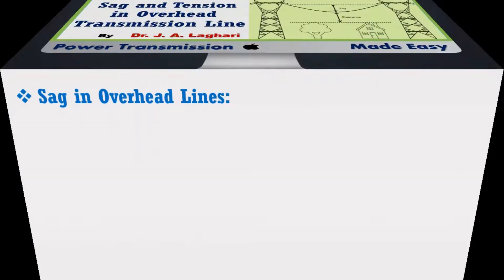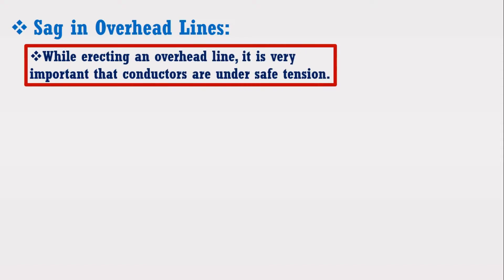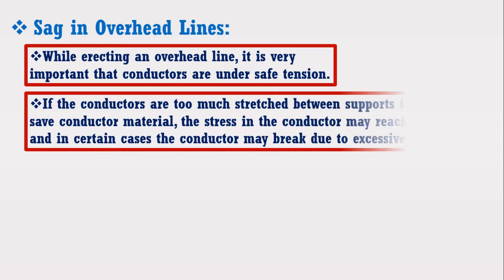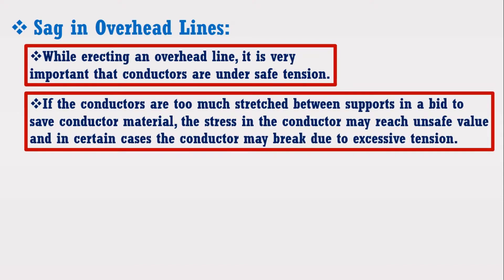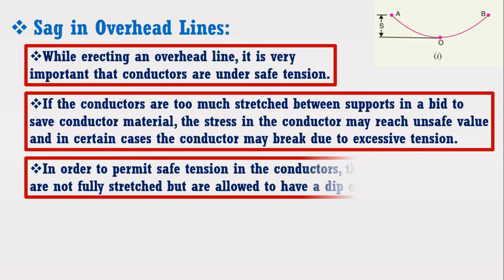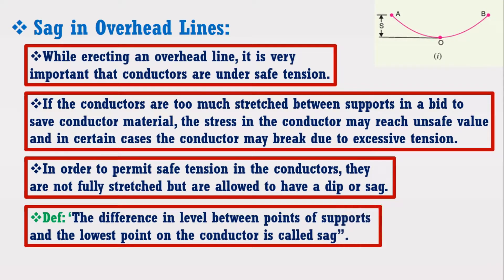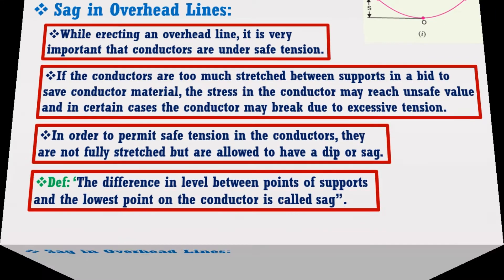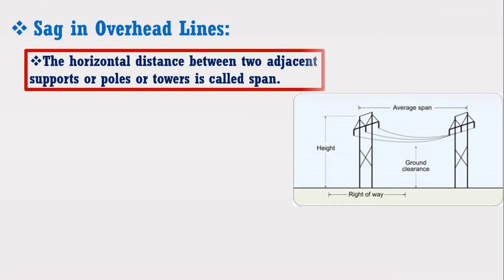While erecting an overhead line, it is very important that conductors are under safe tension. If the conductors are too much stretched between the supports in a bid to save the conductor material, the stress in the conductor may reach unsafe value and in certain cases the conductor may break due to excessive tension. In order to permit safe tension in the conductors, they are not fully stretched but are allowed to have a dip or sag. The difference in level between points of supports and the lowest point on the conductor is called sag. Furthermore, the horizontal distance between the two adjacent supports or poles or towers is called span, as shown in the figure.